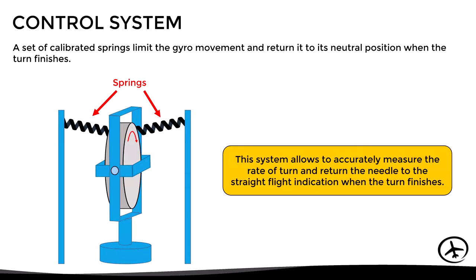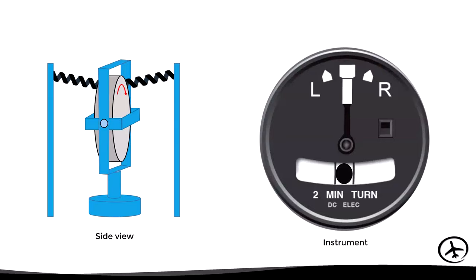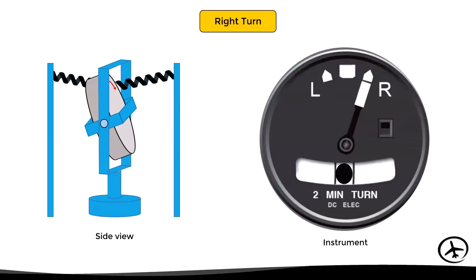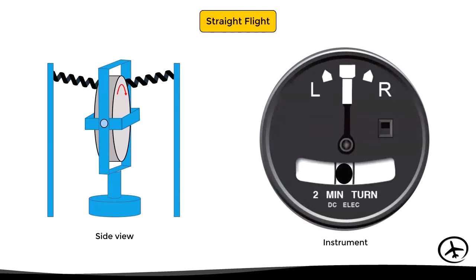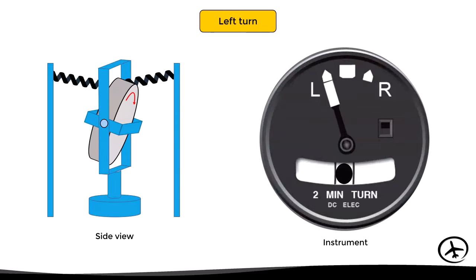Here are some examples: when the aircraft is flying straight, the gyro remains in the neutral position and the needle points to the center mark. If the aircraft starts turning to the right, the gyro tilts due to precession, moving the needle to indicate a turn to the right. When the aircraft stops turning, precession stops and the springs return the gyro to neutral. Similarly, if the aircraft turns to the left, the gyro tilts due to precession, making the needle indicate a left turn at the corresponding rate of turn.